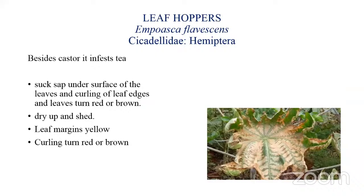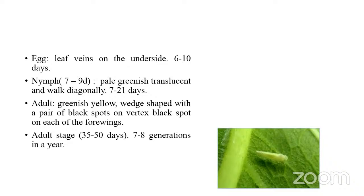Moving on to sucking pests, the first is the leaf hopper Empoasca flavescens, belonging to family Cicadellidae and order Hemiptera. This castor jassid is a minor pest, mostly recorded from Bihar, Tamil Nadu, and Assam. It also attacks tea. Both nymphs and adults suck sap from the under surface of the leaves, injecting a toxin that causes curling of leaf edges. Leaves gradually turn red or brown, dry up, shed, and the leaf margin becomes yellow.